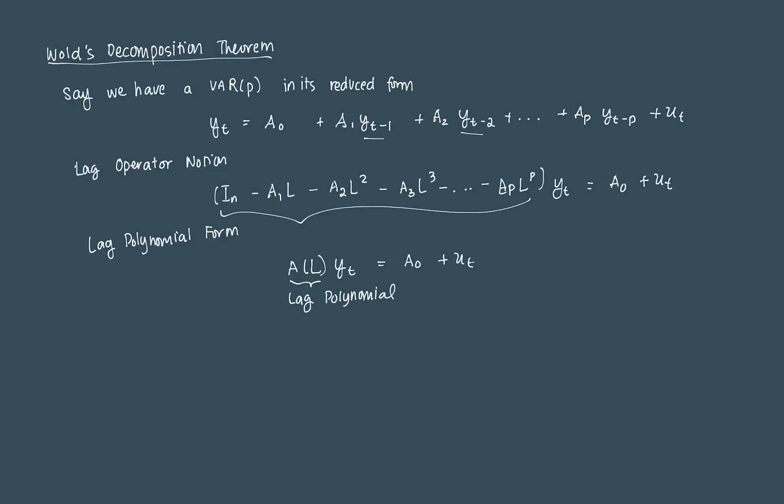In order for a VAR to be stationary, the polynomial of the lag operator, which is this A(L), must be invertible. We discussed this before with the AR model, and since the VAR is just a generalization of an AR model, this must be invertible.